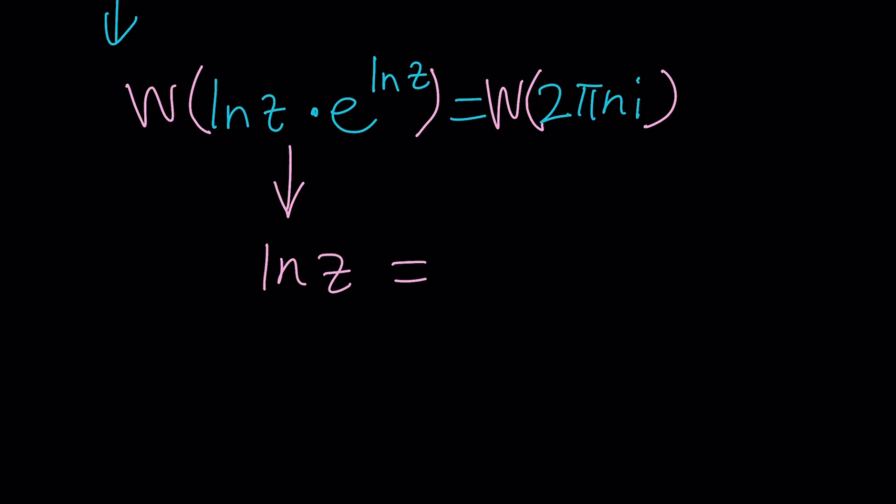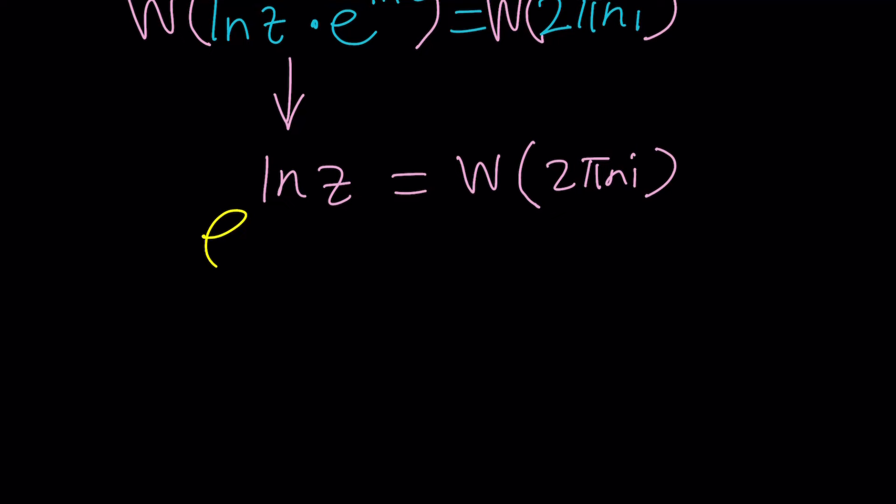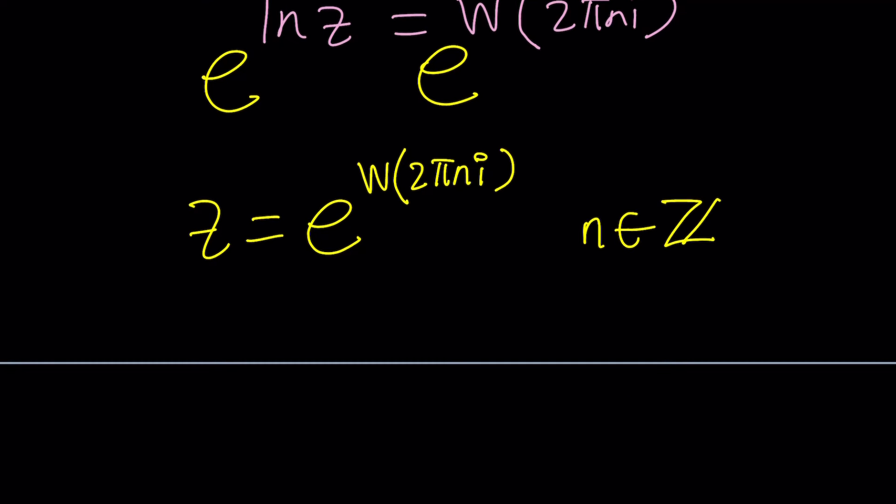Which is nice, and that's gonna be the W of two pi n i. Obviously this is a general way to write it, but again we're looking for z. How do we get z from here? We can do e to the power both sides, so e to the ln z is gonna be z. You see we can convert back and forth which is a very helpful identity, and z is gonna be e to the power W of two pi n i, where n is an integer, positive or negative or zero. Can it be zero? Absolutely, and we'll look at that.